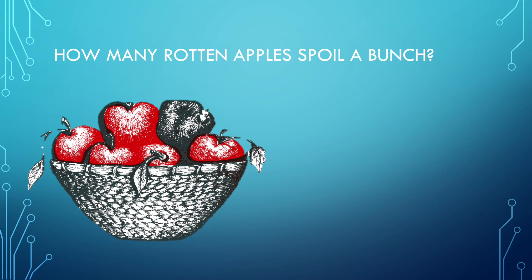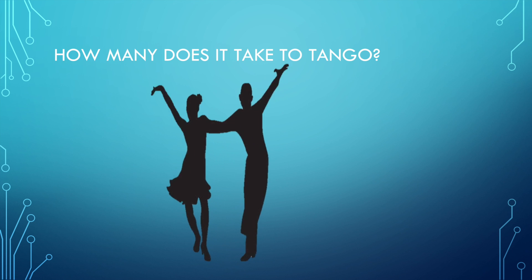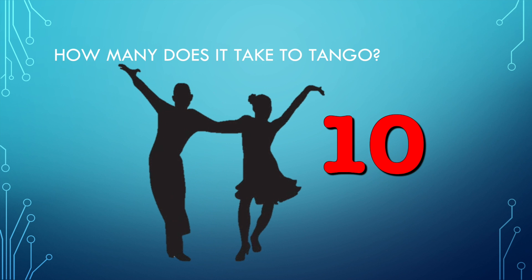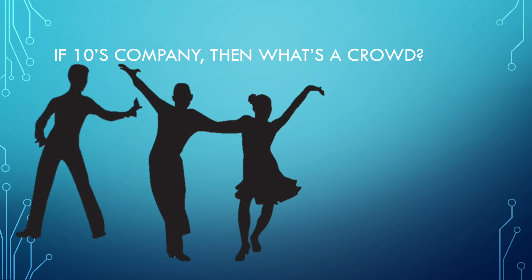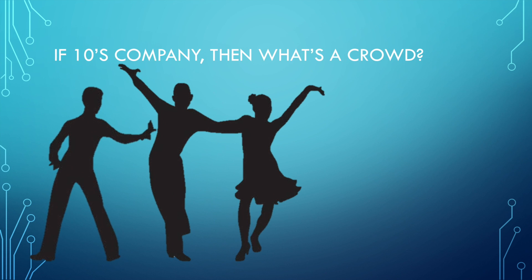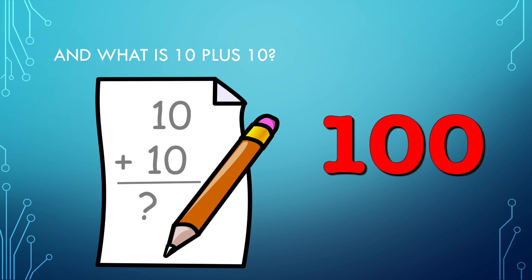How many rotten apples spoil a bunch? One. How many does it take to tango? One zero. If one zero's company, then what's a crowd? One one. And what is one zero plus one zero? One zero zero.